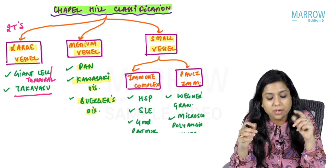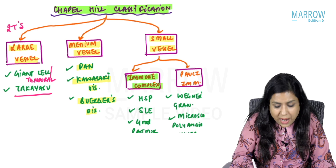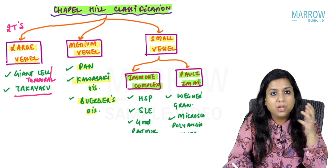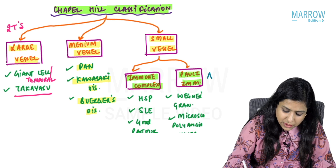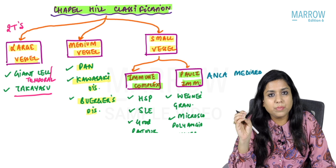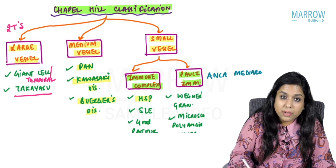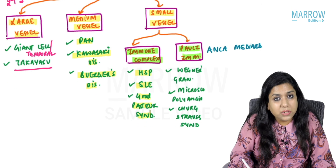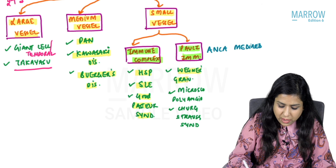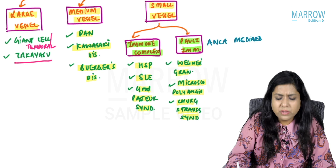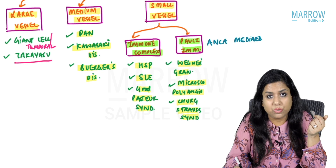Small vessel vasculitis is divided into two categories: immune complex mediated or pauci-immune. Pauci-immune means the vasculitis is ANCA mediated. Immune complex mediated vasculitis includes Henoch-Schönlein purpura, SLE, and Goodpasture syndrome, while pauci-immune vasculitis includes Wegener's granulomatosis, microscopic polyangiitis, Churg-Strauss syndrome, and Behcet syndrome.